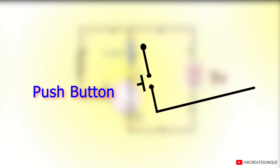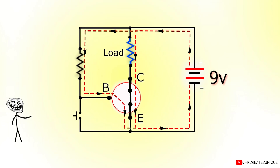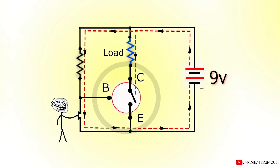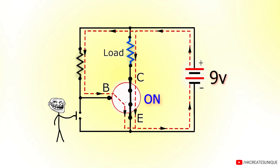If a push button is connected between base and emitter, pressing the button will turn the transistor off, and releasing the button will turn it back on.